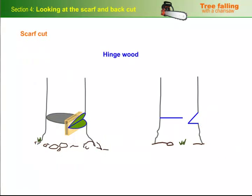Remember, it's the hinge wood that controls the fall and stops the tree from twisting or breaking sideways. And any errors in the scarf will have an effect on the shape and performance of the hinge.